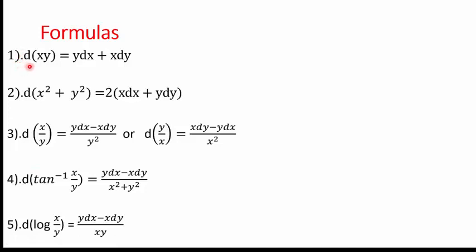In the first formula, if we differentiate X·Y — a product of two variables — we use differentiation by parts: differential of the first, which is dX, into the second part Y, plus the first part X into the differential of the second, which is dY. So d(XY) = Y dX + X dY.